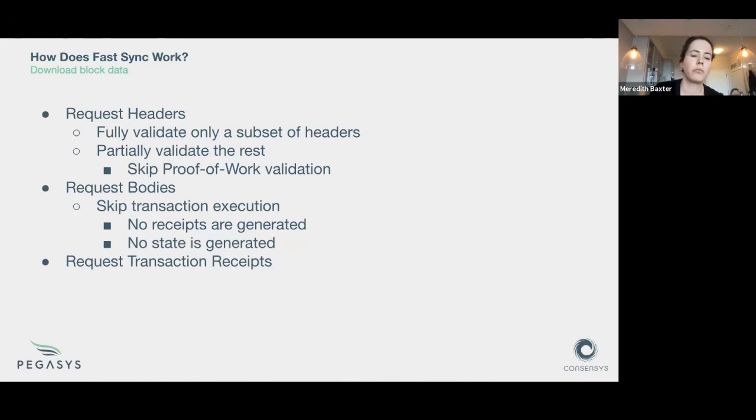For the headers, skipping proof of work validation. For the bodies, we're skipping transaction execution. That means we're not generating state and we're also not generating transaction receipts. For the transaction receipts, this is an extra new type of query that we run against the network, so we just ask for the receipts associated with any given block.